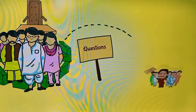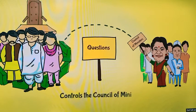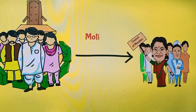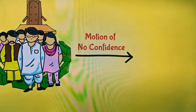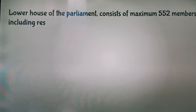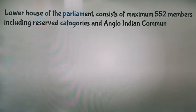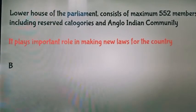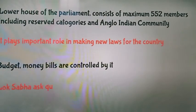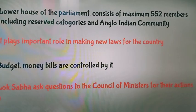Lok Sabha can ask questions to the Council of Ministers for their actions and controls them. If the Lok Sabha passes a motion of no confidence with a majority vote against the Council of Ministers, the Council of Ministers has to resign, including the Prime Minister. So the Lok Sabha is the lower house of parliament, consists of a maximum 552 members including reserved categories and the Anglo-Indian community, plays an important role in making new laws, controls budget and money bills, and can question the Council of Ministers.